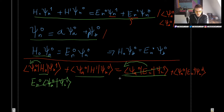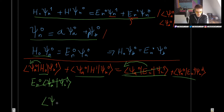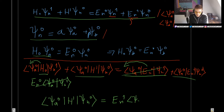We are left with: Bra-Psi_A0, H', Ket-Psi_N0 equals E_N1 Bra-Psi_A0 Ket-Psi_N0. Now we are going to use the fact that these states are degenerate, so we write Psi_N0 as the linear combination of the degenerate states.